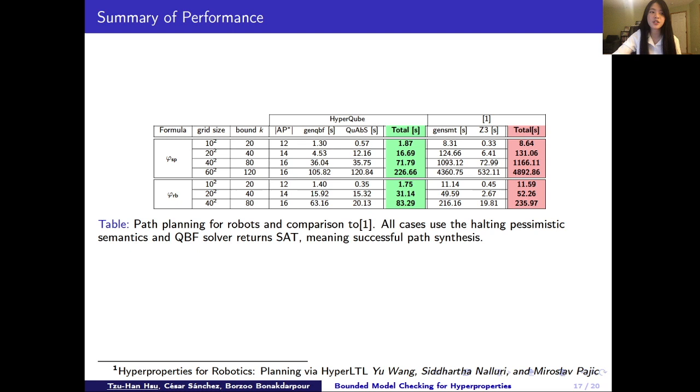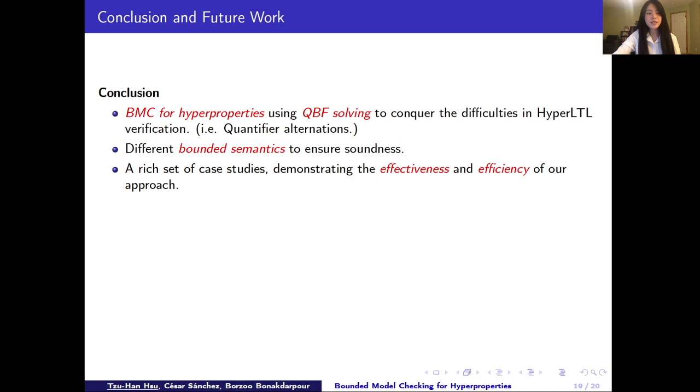In conclusion, in this work, we introduce the bounded model checking technique for verification of hyper properties expressed in HyperLTL. And to handle different quantifier alternations, we reduce the BMC problem to QBF solving. Also, we proposed different semantics that ensure the soundness of inferring the outcome from QBF solving to the model checking problem. And last, through a rich set of case studies, we demonstrate the effectiveness and efficiency of our approach in verification of information flow security, linearizability, or path planning for robotics.